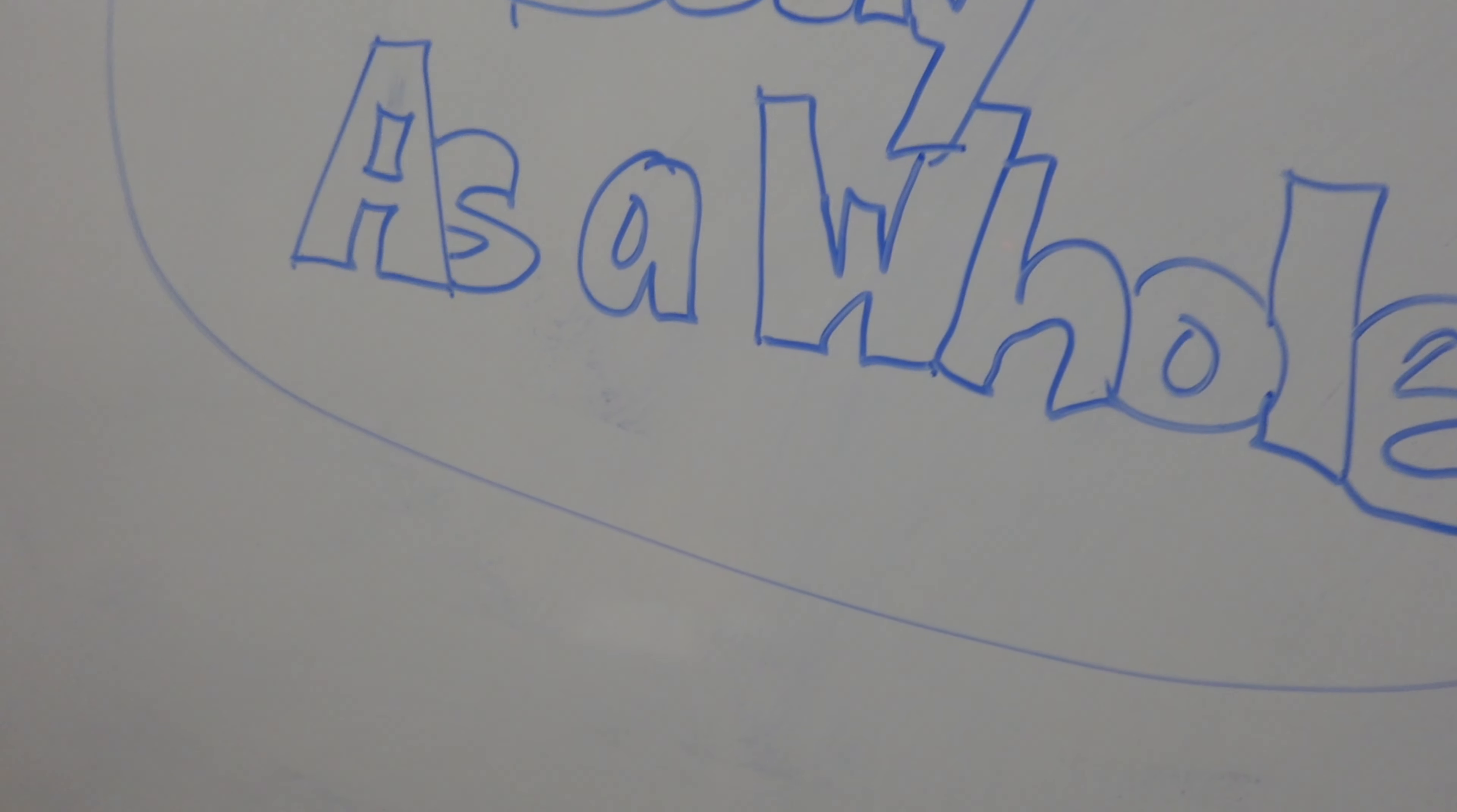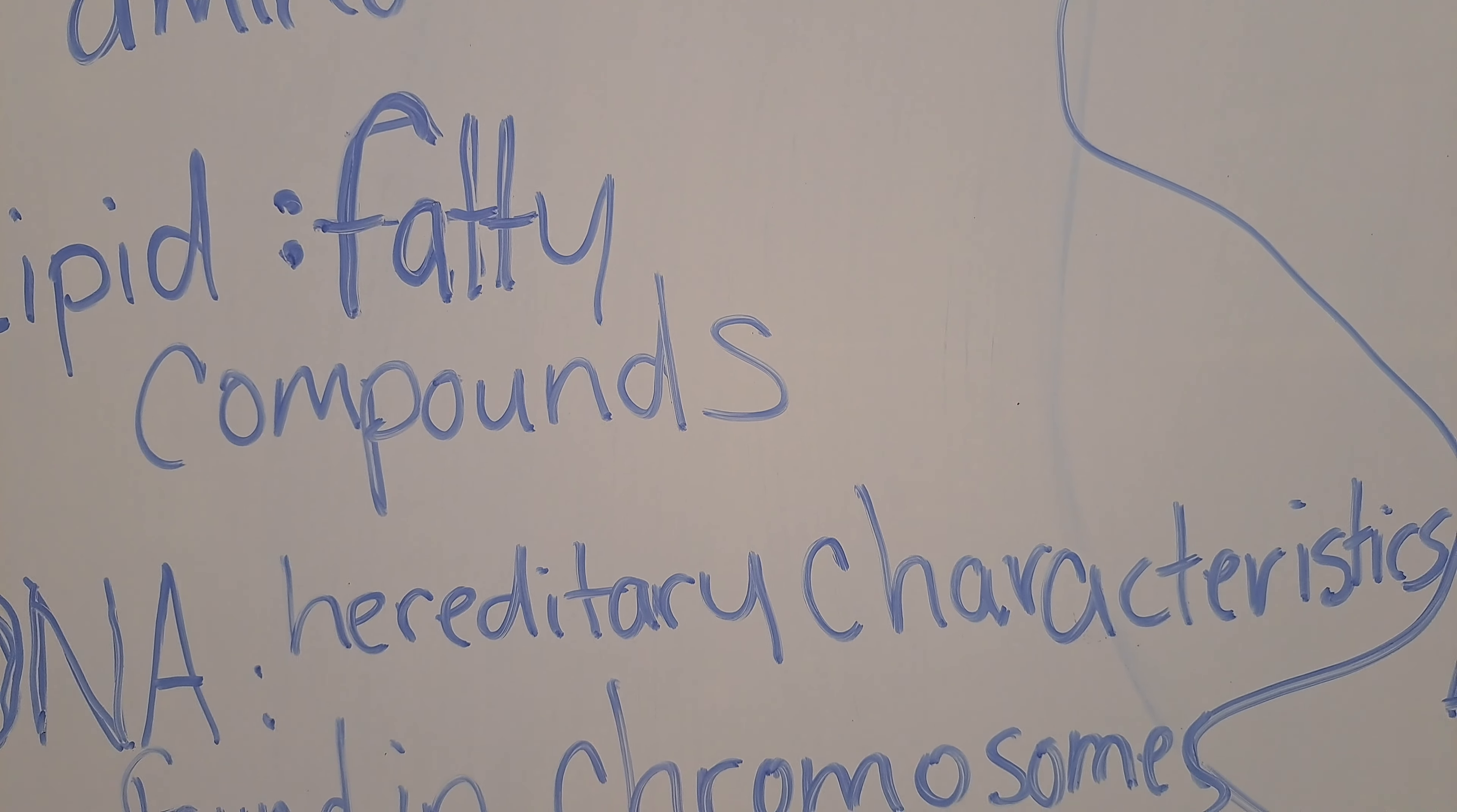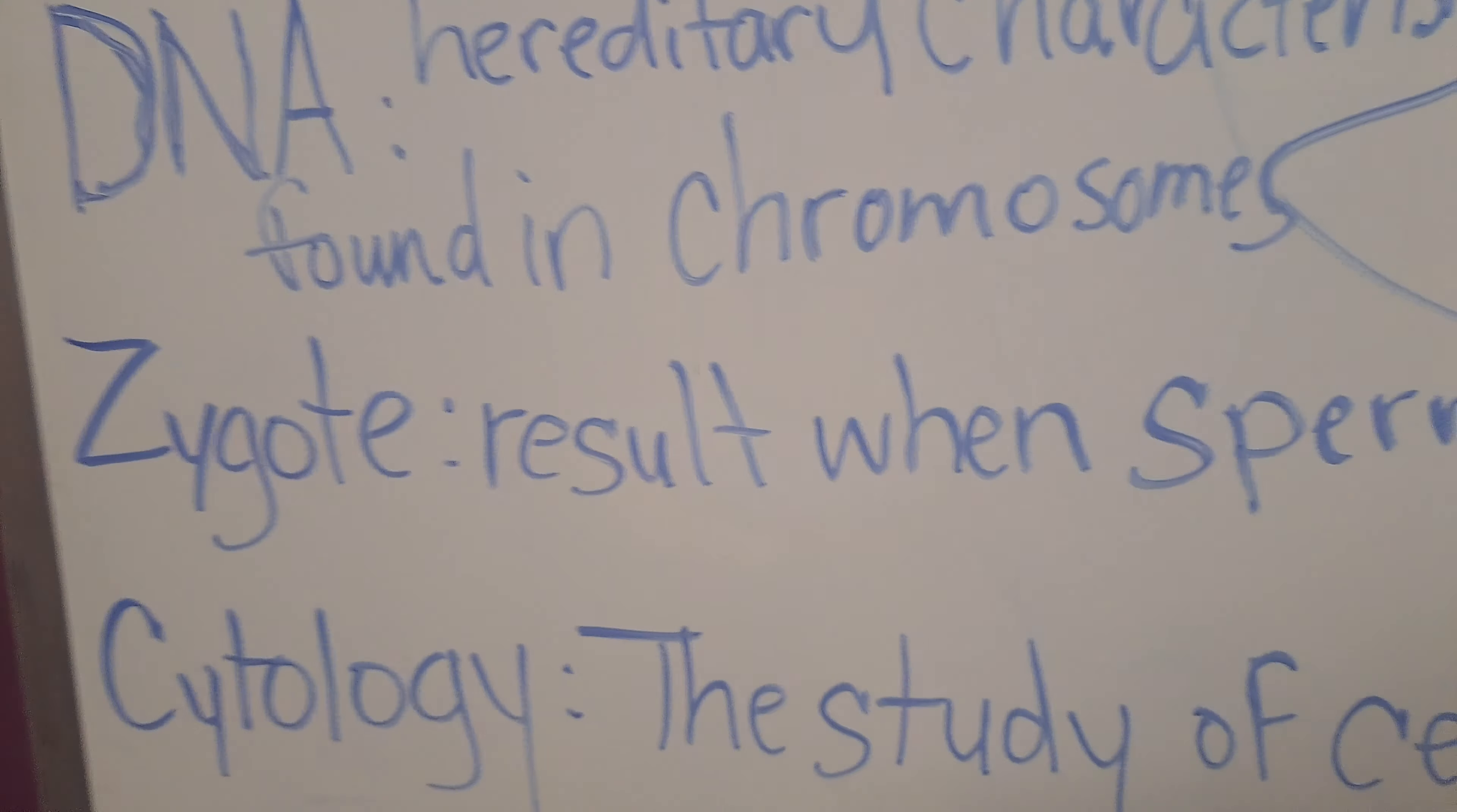Okay, so now I'll go to popular definitions. Protein is a food substance based on amino acids. Lipid is the fatty compounds like cholesterol. DNA, I just summed it up, it's the hereditary characteristics found in chromosomes. The zygote is the result when sperm fertilizes the egg, and cytology is the study of cells.